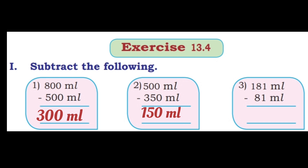Second question: 500 ml minus 350 ml. 0 minus 0 is 0. Borrow 1, so 10 minus 5 is 5. Then 4 minus 3 is 1. Answer: 150 ml.